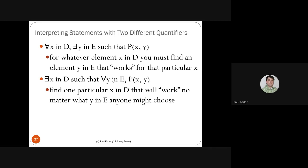Swapping quantifiers gives a different meaning. 'For every circle, there is a triangle to the right of it' is different from 'there exists a triangle that every circle is to the right of.' Swapping the two quantifiers produces two entirely different statements.